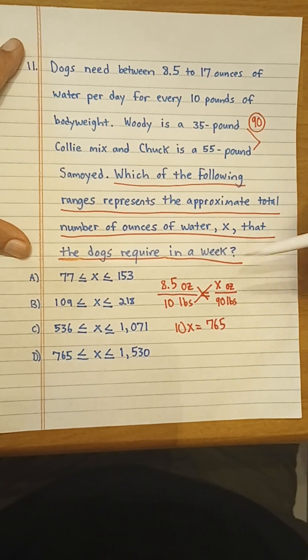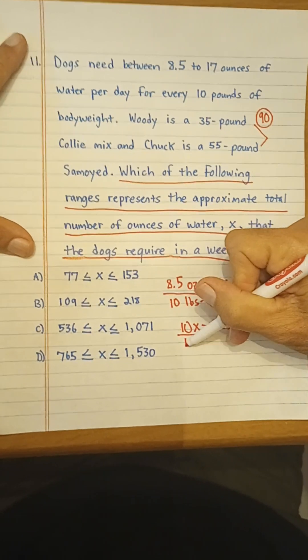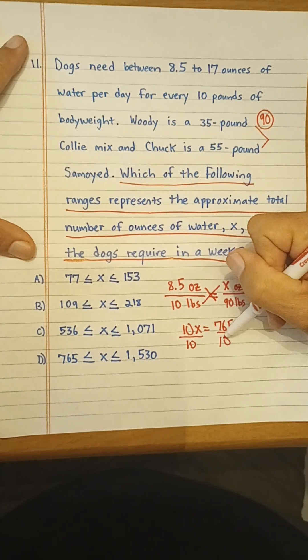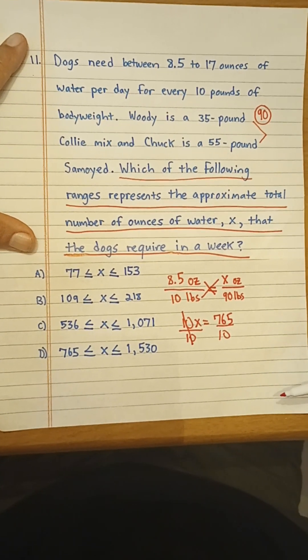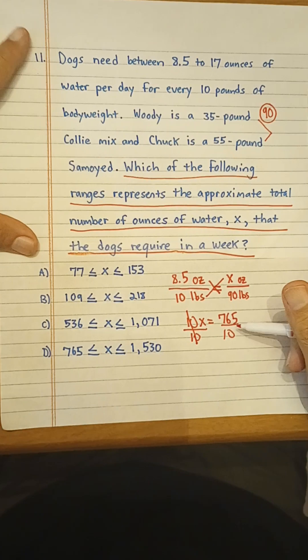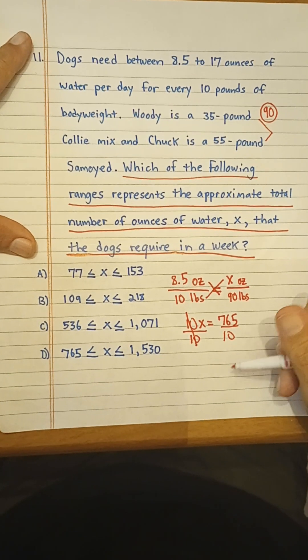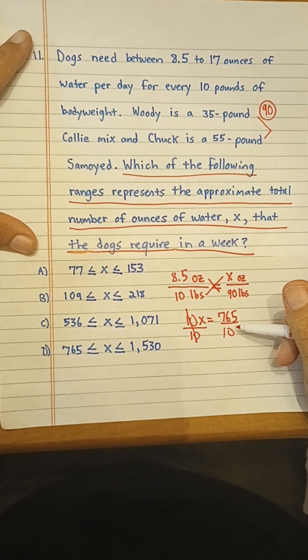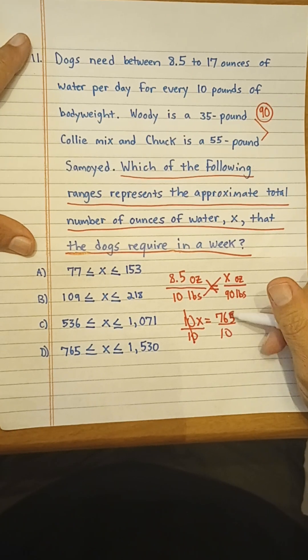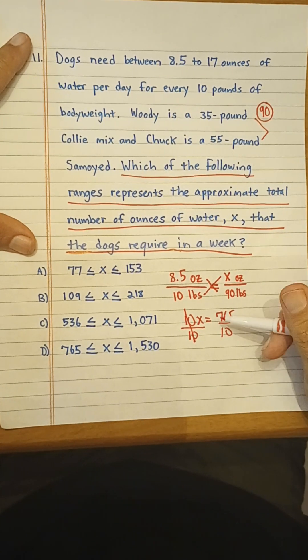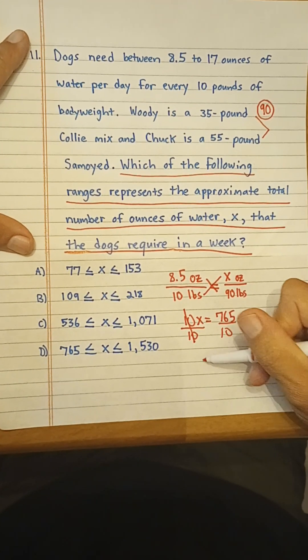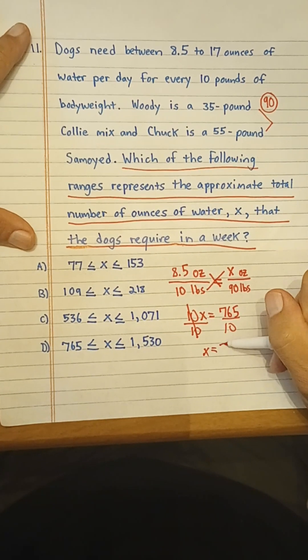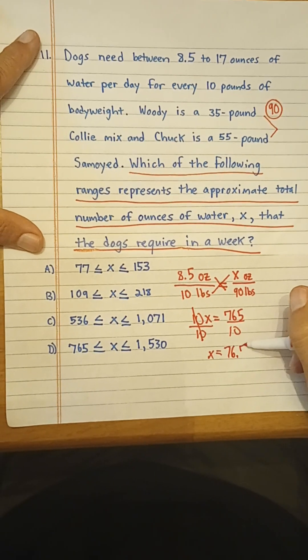We solve for x by dividing both sides by 10. And then here x is going to be 76.5, right? We divide, again, it's just like moving the decimal point over 1. So here x is going to equal 76.5.